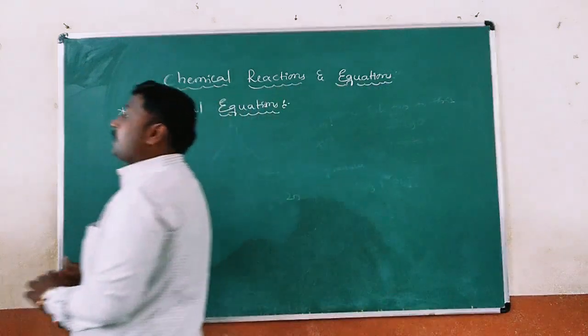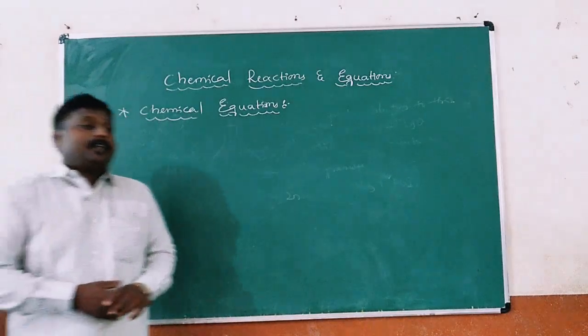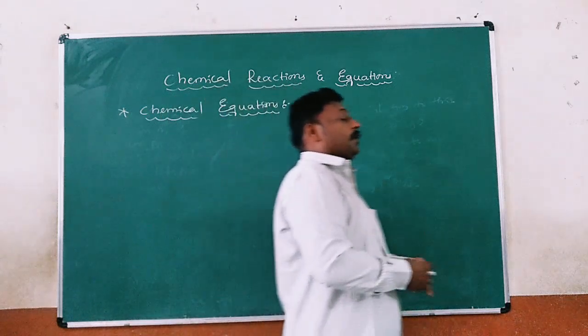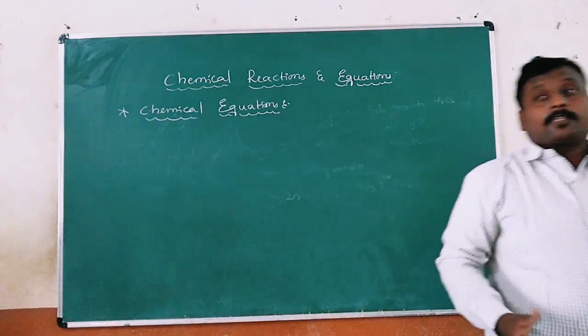Chemical equations are written in two forms: one is the word equation and the other is the symbolic representation.